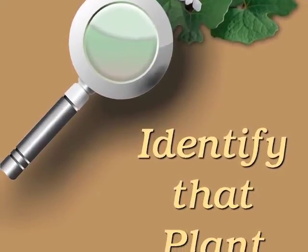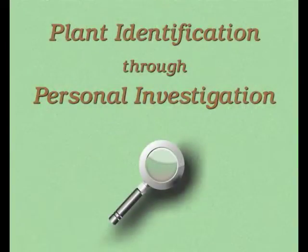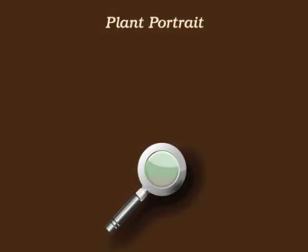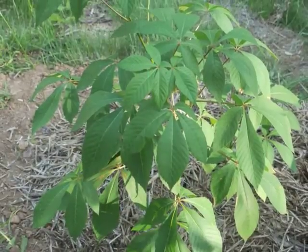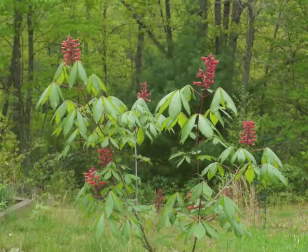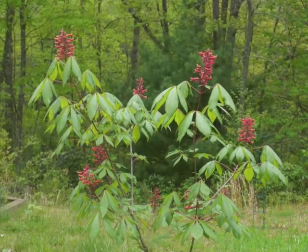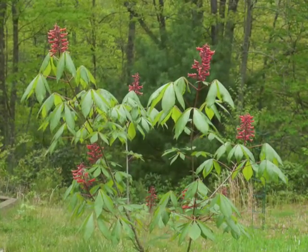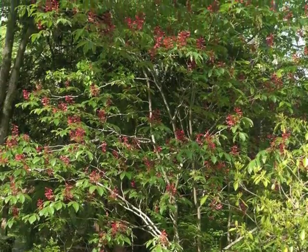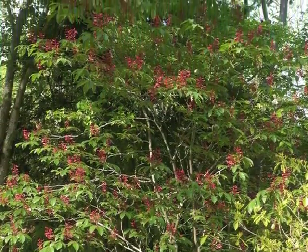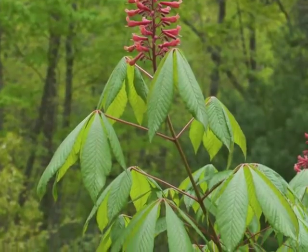You're watching Plant Identification Through Personal Investigation with Angeline Whitmire. This plant portrait is for Red Buckeye, Aeschylus pavia. Red Buckeye is a small tree native to southern and eastern regions in the United States. A mature tree grows about 20 to 25 feet tall, with a maximum trunk size of 4 to 6 inches in diameter, after years of slow growth.